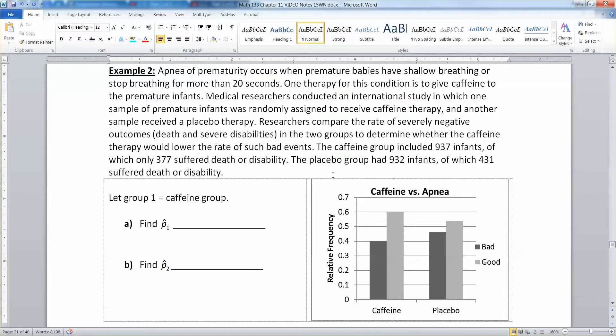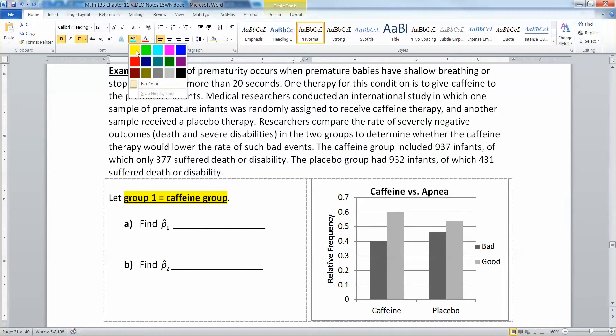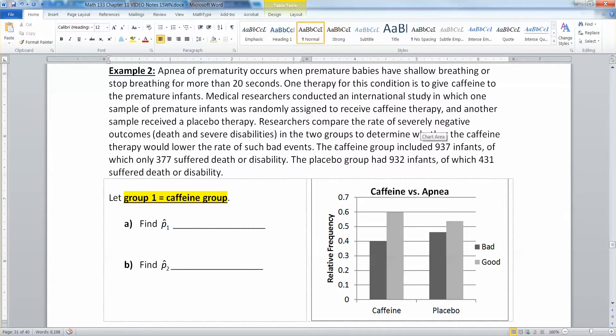Our first mission is to find P1 hat and P2 hat. So P1, they're telling us that group one is the caffeine group. Since that's the caffeine group, you can see here that they have the information that you need. The caffeine group had 937 infants and 377 suffered death or disability. When babies are born prematurely, their lungs are not fully developed, and that can be very deadly for those babies. They're trying to administer caffeine to see if it will stimulate the system and get the babies to breathe better.